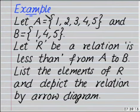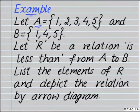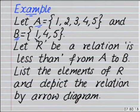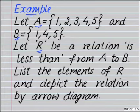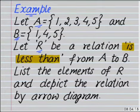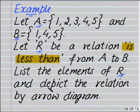Now let's see an example. Let A be the set containing elements 1, 2, 3, 4, 5 and B be the set containing elements 1, 4 and 5. Let R be the relation 'is less than' from set A to set B. Then list the elements of R and depict the relation by arrow diagram.